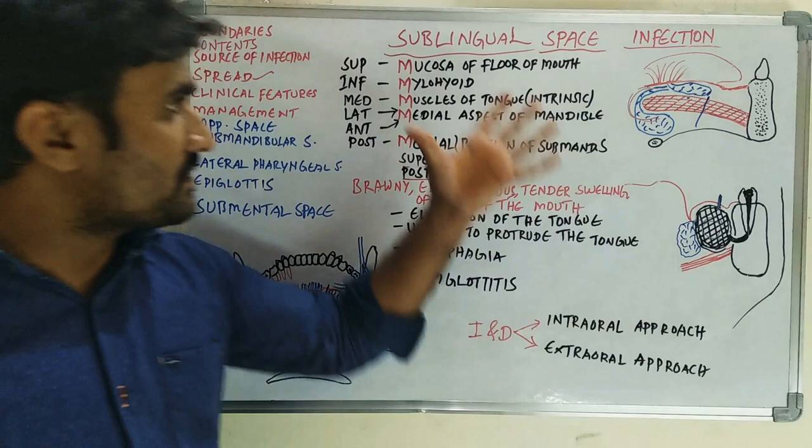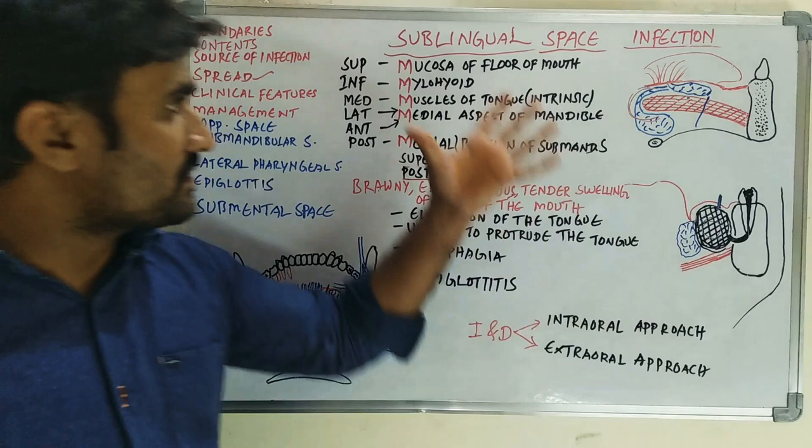That is all about sublingual space infection. The easiest part to remember is the boundaries — just remember the letter M.